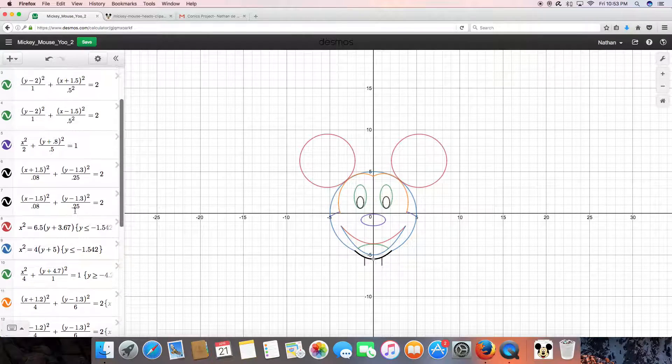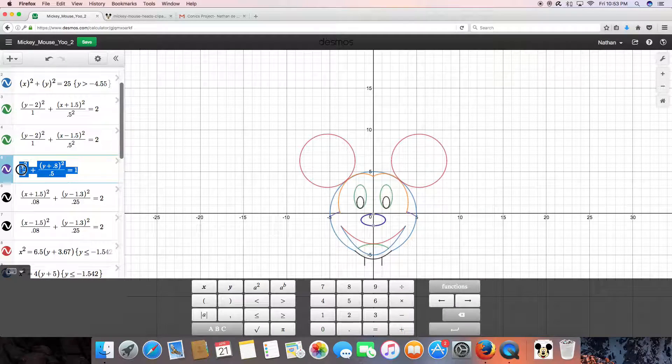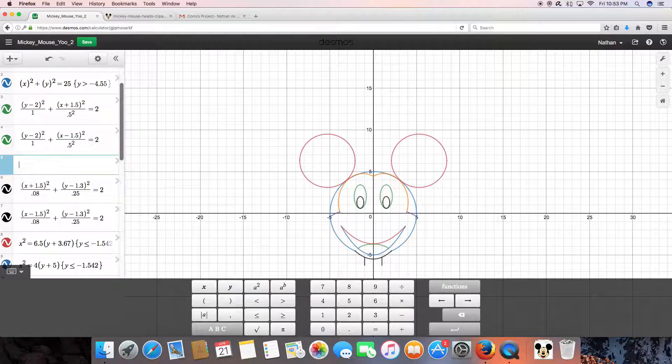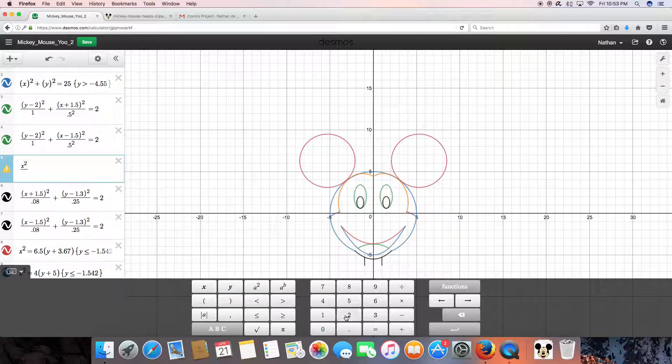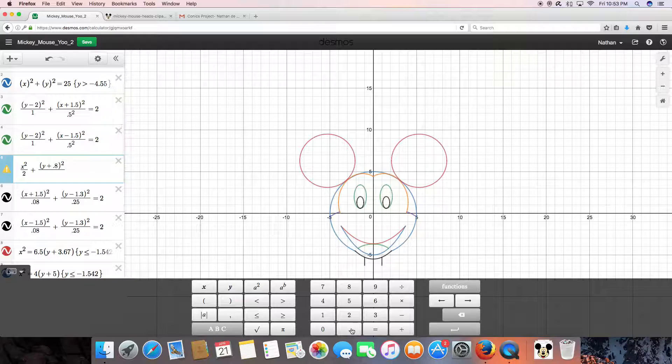Let's start off with the nose. Now the nose is an ellipse which expands horizontally and the equation I used was x squared divided by 2 plus (y plus 0.8) squared divided by 0.5 equals 1 and there you have it your nose right there.